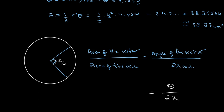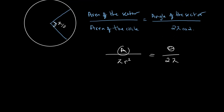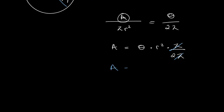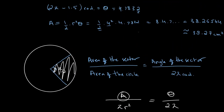So if we let the angle of the sector be theta, the ratio becomes theta over 2π. Setting the area of the sector as the unknown A and the area of the circle as πr², we can rearrange to get: A equals theta times r squared times π divided by 2π. The two π's cancel, and with a bit of rearranging we arrive at our equation: A equals one half times r squared times theta.